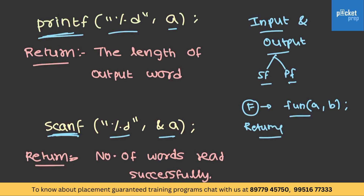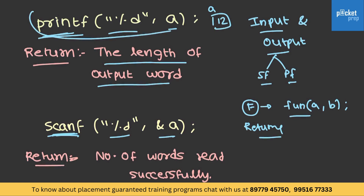Printf actually returns the length of the output word. For example, if a is 12, then the printf of that line will return 2. If the value of a is 1234, then it actually returns 4.